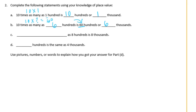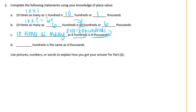And C. Blank as 800 hundreds is 8 thousands. So going with the pattern of what we were doing before, let's say 10 times as many. So 10 times as many as 800 hundreds is 8 thousands, because we would have 8 times 10 or 80 hundreds. And that would get us 8 thousands.